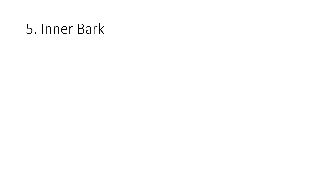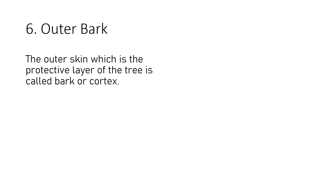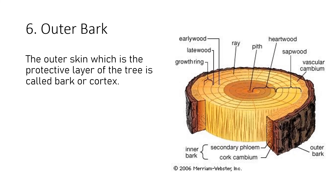The inner bark is the layer that surrounds and protects the cambium layer. The outer bark or cortex forms the outermost cover or skin of the tree, forming the outer skin that protects all inner layers. The bark insulates the tree against temperature exposure and saves the sapwood and the inside layers from drying out.